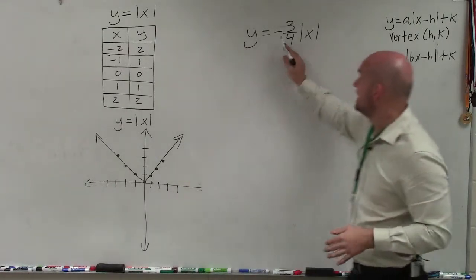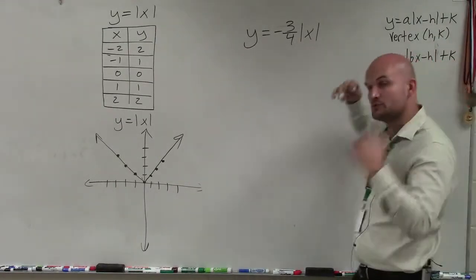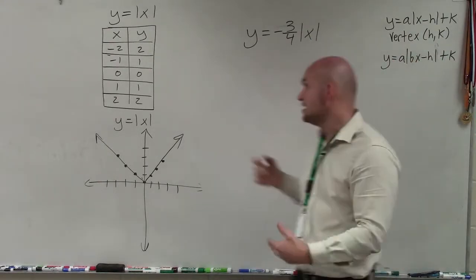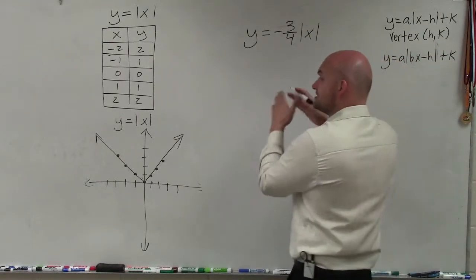However, since I have a negative, that tells me my a is negative, which means I'm going to reflect over the x-axis. So instead of my graph opening up, it's now going to open down.